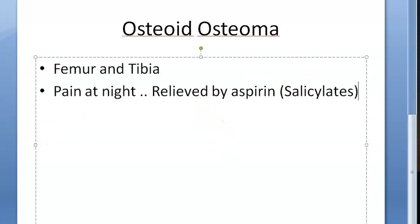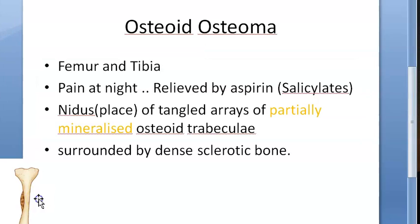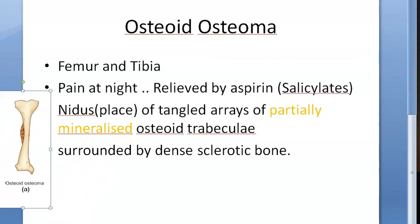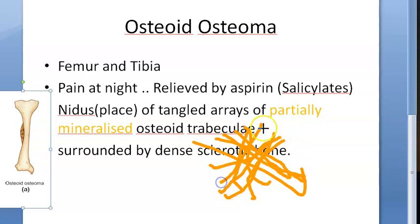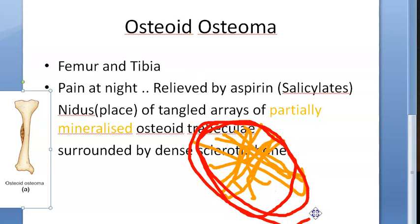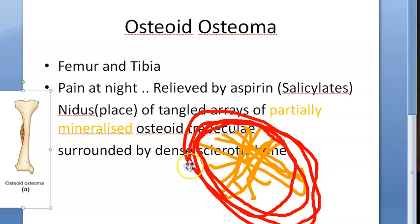Histologically, there will be a nidus — a place of tangled arrays of partially mineralized osteoid trabeculae — which is surrounded by dense sclerotic tissue. The tissue around the nidus is dense and sclerotic.